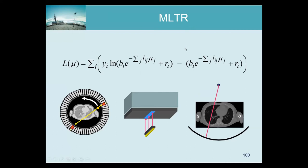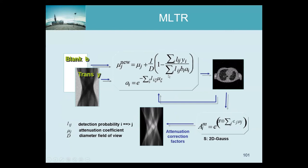People looked at different ways to maximize the likelihood and moved away from EM — using different algorithms instead. Because there was now a vacancy in the abbreviation, people put 'T' there for transmission, suggesting that EM was originally for emission (which it was not). The likelihood has the transmission measurement, the known blank scan assumed to be noise-free, the transmission scan subject to noise, and the forward model: the blank scan attenuated by the unknown attenuation, plus random, scatter, and emission contributions.